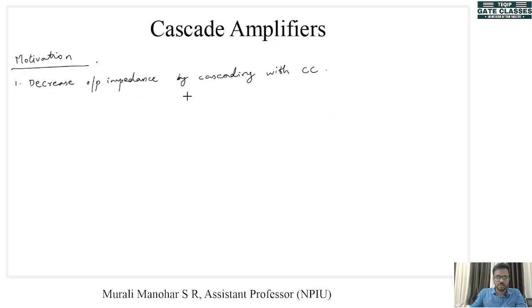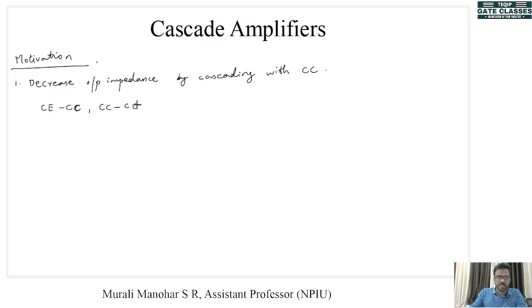The most common cascading with CC configurations are CE-CC — that is common emitter as the first stage and common collector as the second stage — and CC-CC, where both first and second stages are common collector configurations.